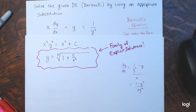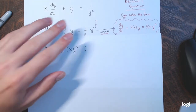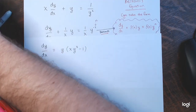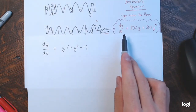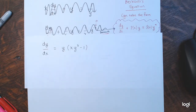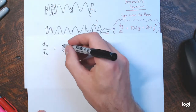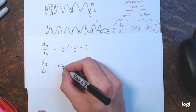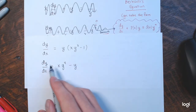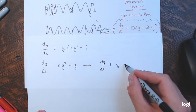Now for the second example — another Bernoulli equation. We have dy/dx = y(xy³ − 1). Distributing the y: dy/dx = xy⁴ − y. Simply adding y to both sides: dy/dx + y = x·y⁴. This is nonlinear in y because of the y to the fourth power.